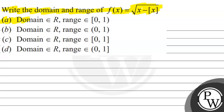Option A: domain belongs to ℝ and range belongs to semi-close interval [0,1). Option B: domain belongs to ℝ, range belongs to open interval (0,1). Option C: domain belongs to ℝ, range belongs to closed interval [0,1]. Option D: domain belongs to ℝ, range belongs to semi-open interval (0,1].